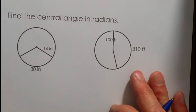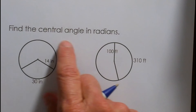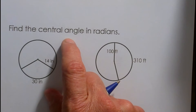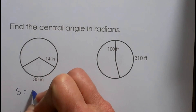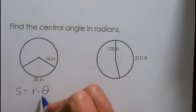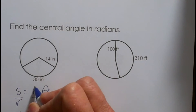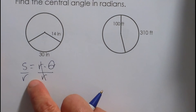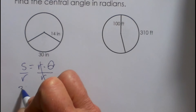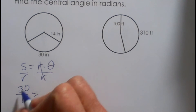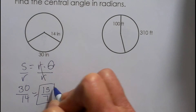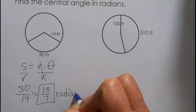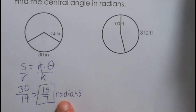Now let's work backwards — this time we are looking for the angle in radians. We are given the arc length and the radius. The formula is S equals R theta, and this time we are finding theta, so we divide both sides by R. Our arc length is 30 and our radius is 14, so theta equals 30 over 14. That reduces by dividing by 2 to give 15 sevenths radians. There is no pi with that answer but that is fine — it is just 15 sevenths radians.